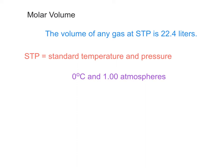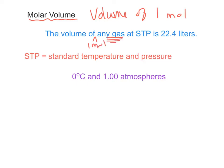Now that we've talked about the mole and molar mass, let's talk about molar volume. This is the volume of one mole. The volume of one mole of any gas — it doesn't matter what it is — at STP, is always 22.4 liters.